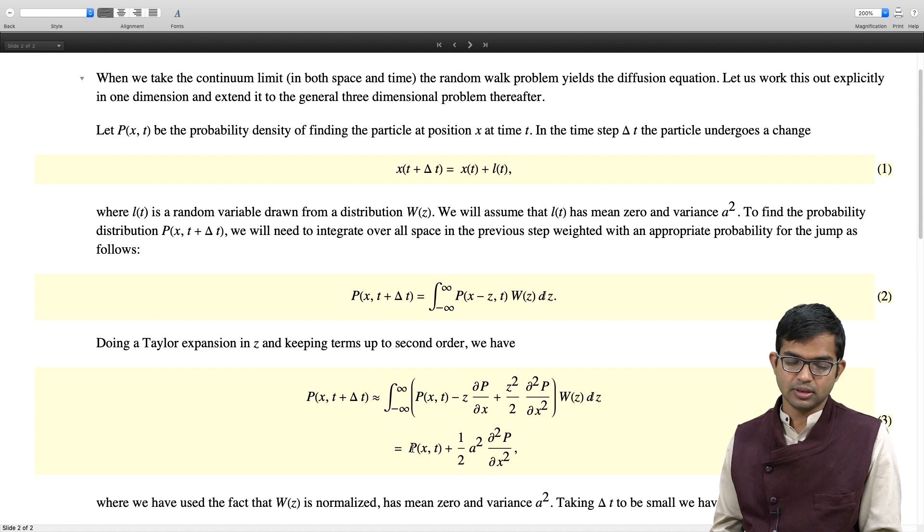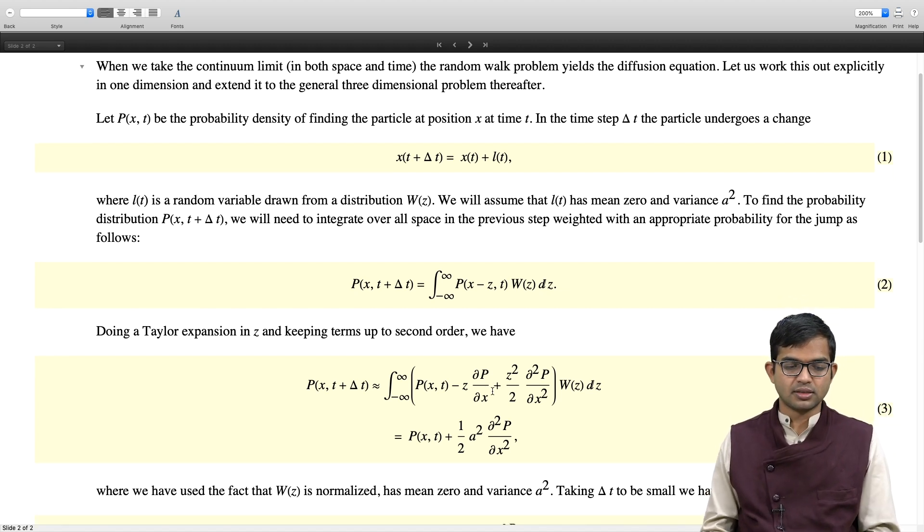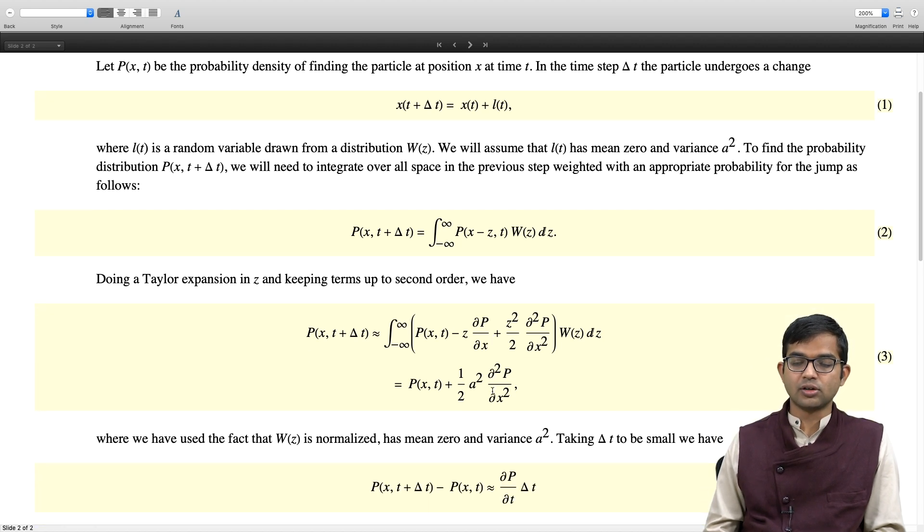Next if you must invoke some features of this distribution W(z), it has mean 0 and variance a squared. Now if you take delta t to be small, that is coming in a moment. But first of all, let us see that this second term actually vanishes. Why does it vanish? It vanishes because dP/dx comes out and then the mean of z is actually just 0. So there is no contribution from the second term. Only the square term comes in. So in some sense, we are keeping this P(x,t) of course. And then we are keeping the next, the lowest order which survives because this first order term will vanish. And so that is the Taylor expansion that we are doing.